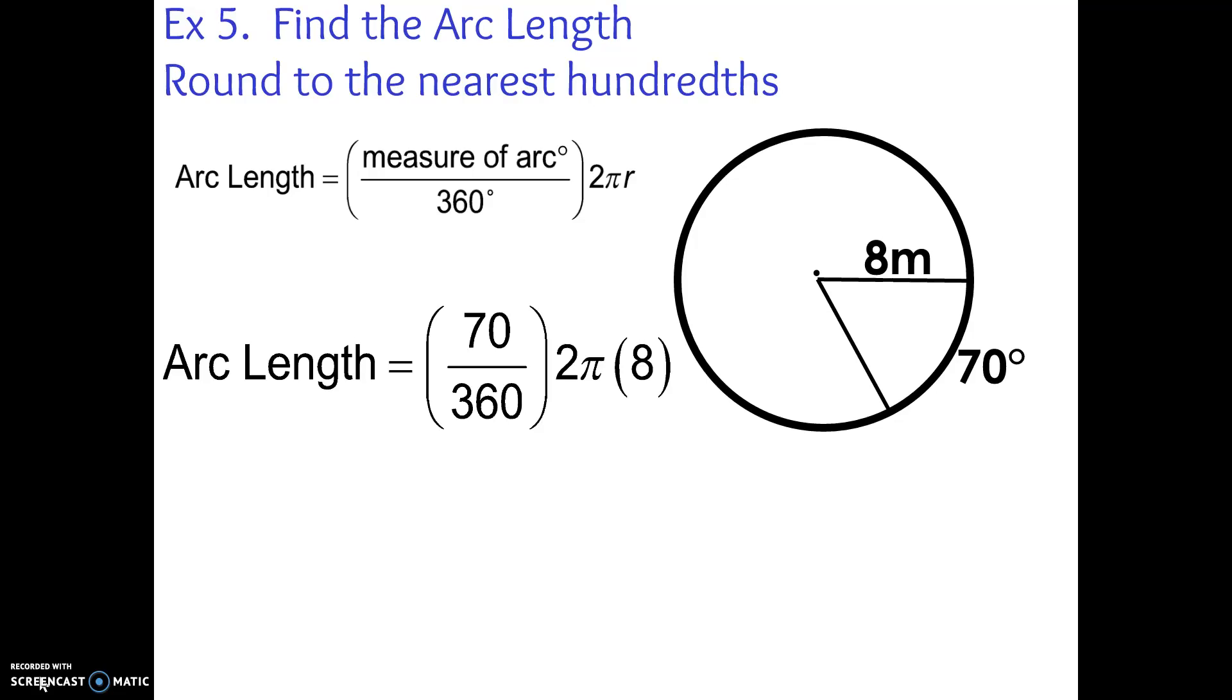And we're rounding to the nearest hundredths. So we're actually going to put pi into our calculator. And you'll find our arc length is 9.77 meters. That is our rounded to the nearest hundredths.